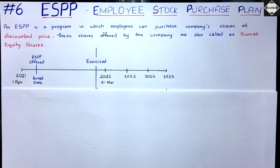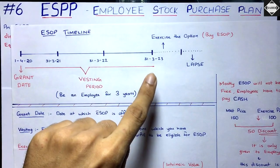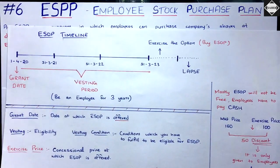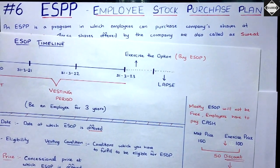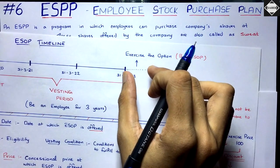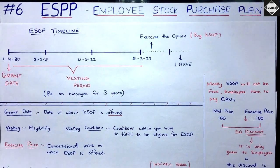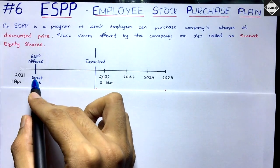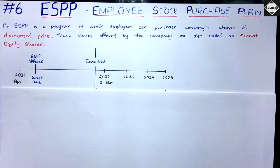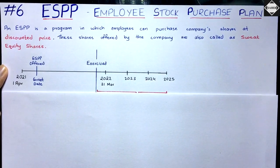When ESPPs are offered, the exercise period starts immediately — that is, from the grant date itself. In ESOP, after granting there is a vesting period, an eligibility period. Only after satisfying vesting conditions does the exercise period start. In ESPP, this vesting period does not exist. Directly from the grant date, employees are able to purchase shares by exercising their ESPP offer.